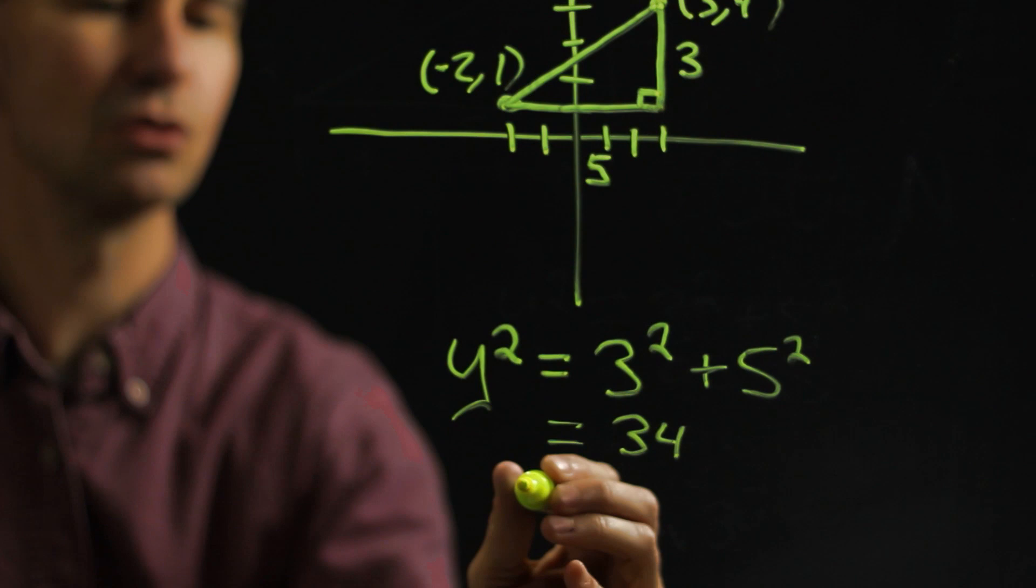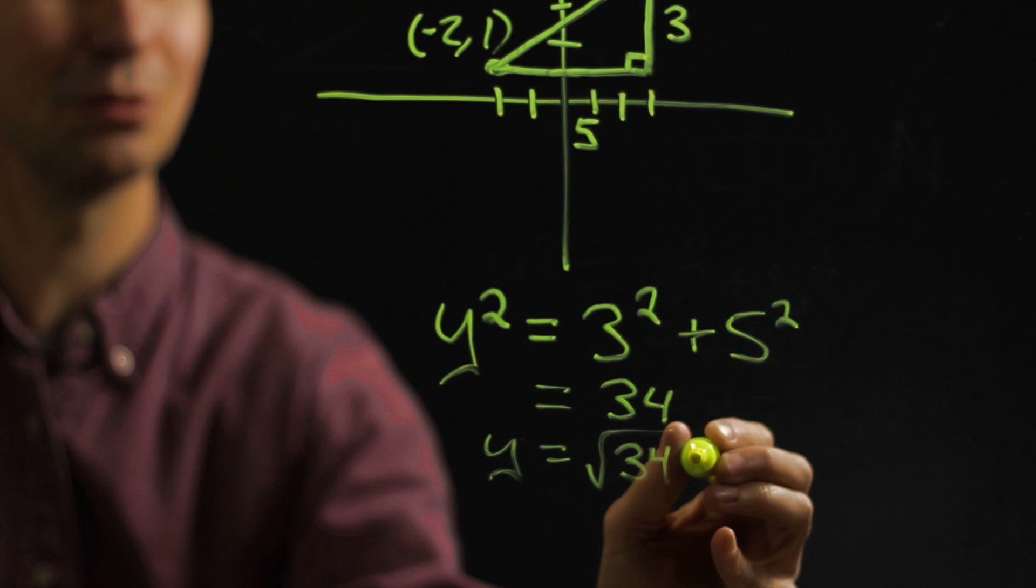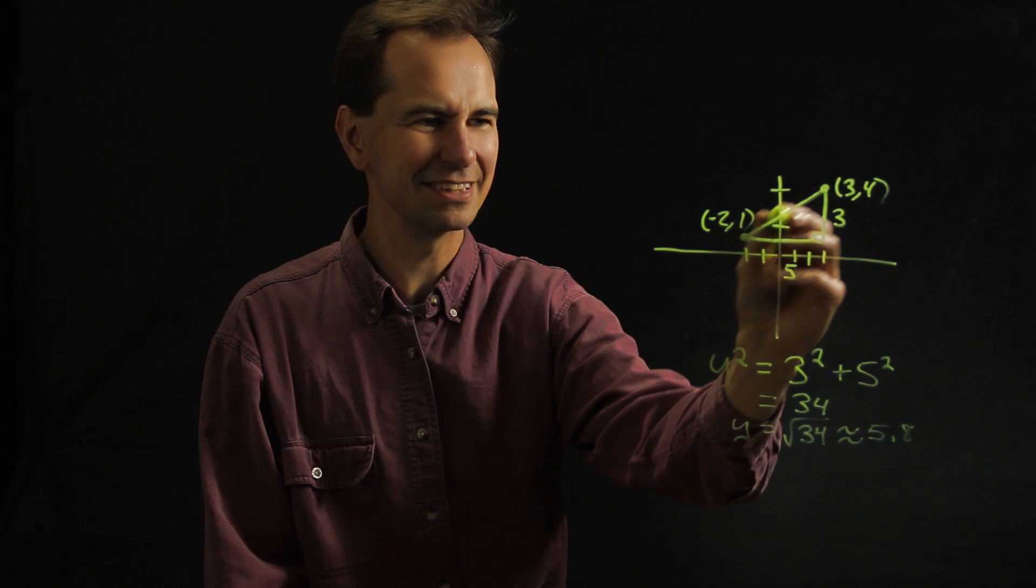So that means y is the square root of 34. And if you plug that into a calculator that's pretty close to 5.8. So that makes sense. We would expect it to be a little bit more than five and a bit more than three, so 5.8 is reasonable.